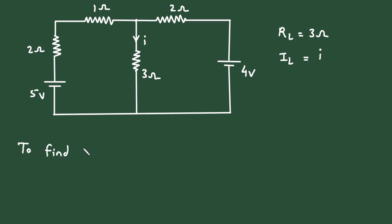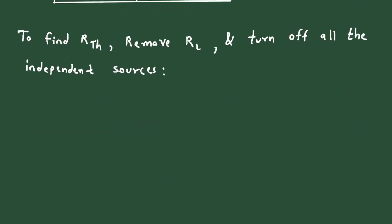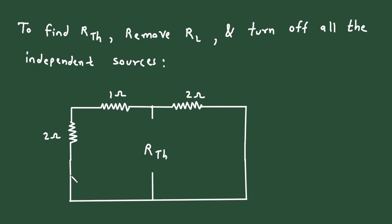To find Rth, first we have to remove RL and turn off all the independent sources. Now when we turn off all the independent sources and remove RL, this will be our Rth. When we turn off a voltage source, it will be short circuited. Here also this is a voltage source, so when we turn off a voltage source, again this will be short circuited.